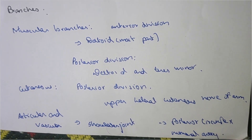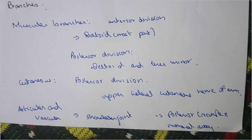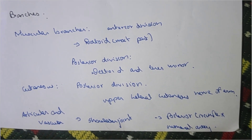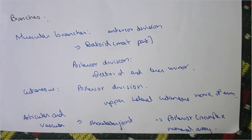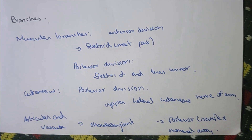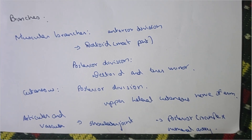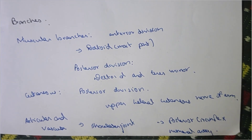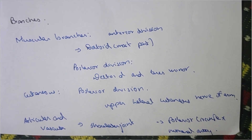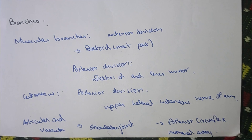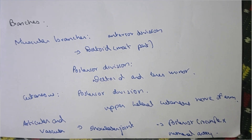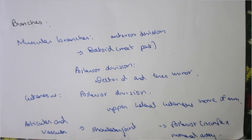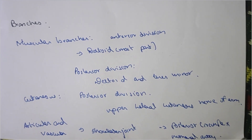The cutaneous branch is the posterior division forming the upper lateral cutaneous nerve of the arm. The articular and vascular supply is to the shoulder joint, via the posterior circumflex humeral artery, which also supplies the shoulder joint.